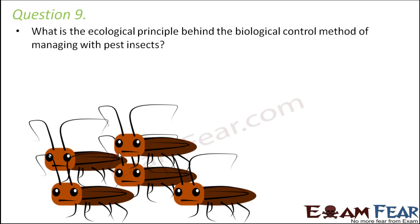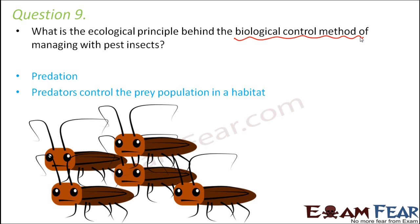Question number 9: what is the ecological principle behind the biological control method of managing pest insects? To kill pest insects, certain organisms are introduced into the field that can eat the pest insects — that is the biological control method. This is based on the principle of predation: one organism eats another species, helping to control the prey population. Any organism that feeds on the pest insects is left in that area to manage the pest population.